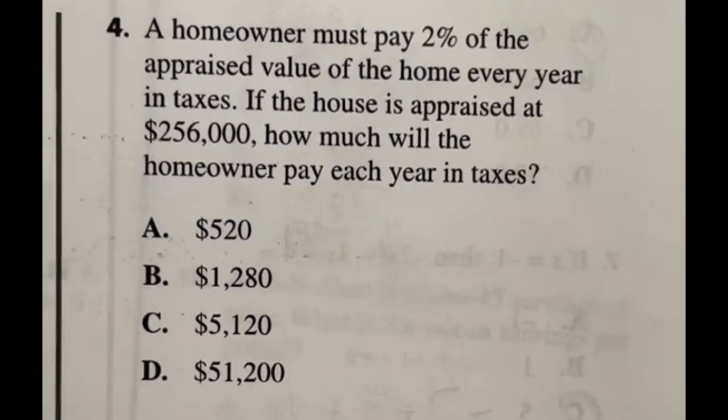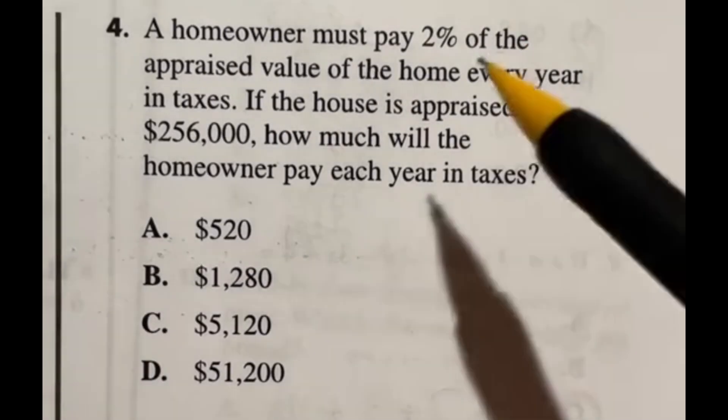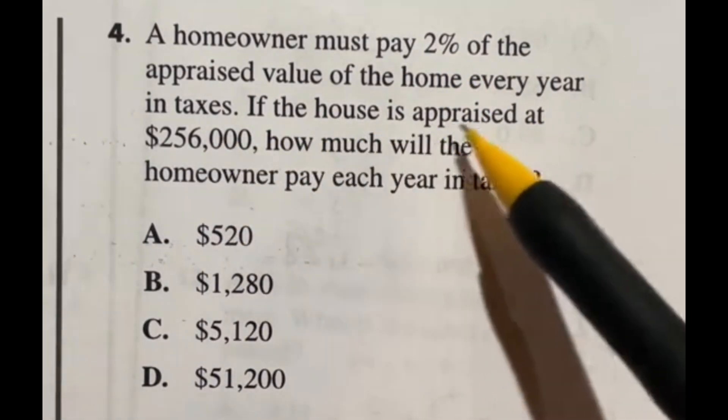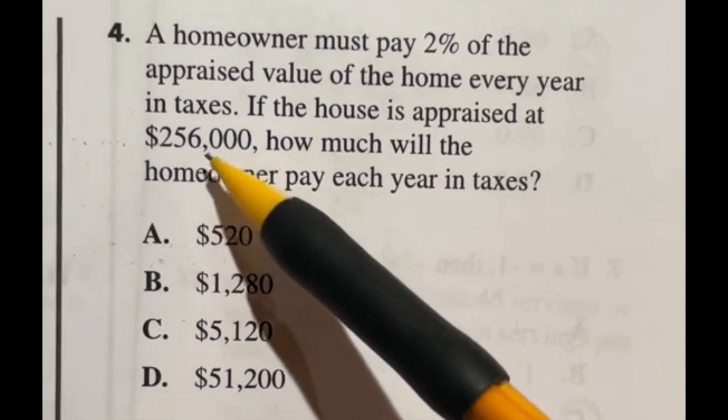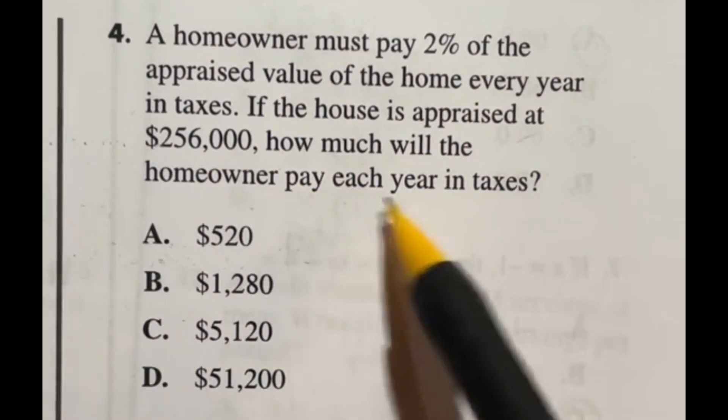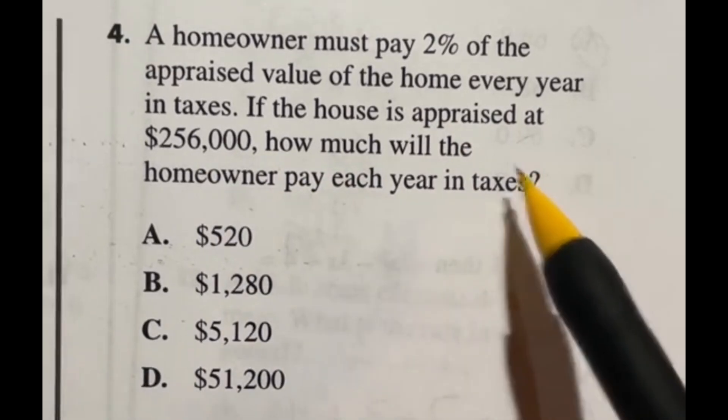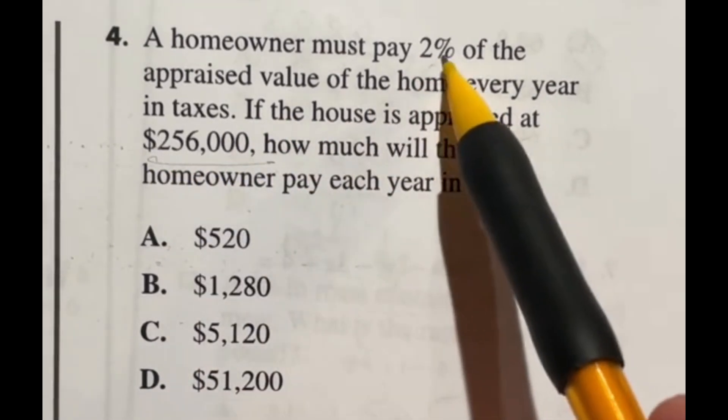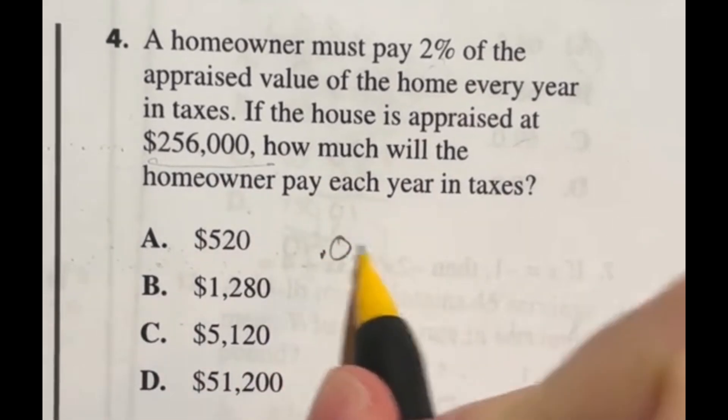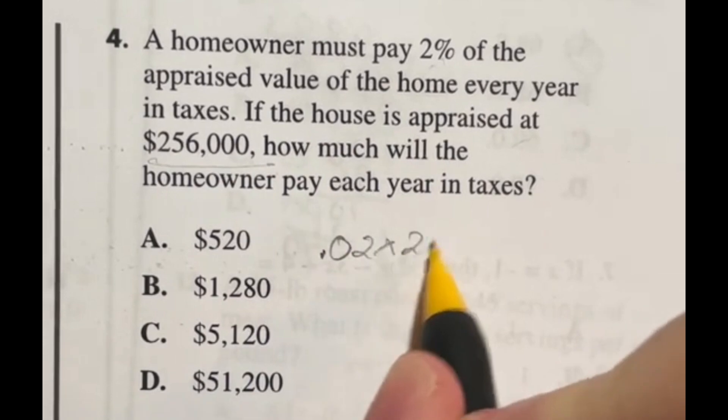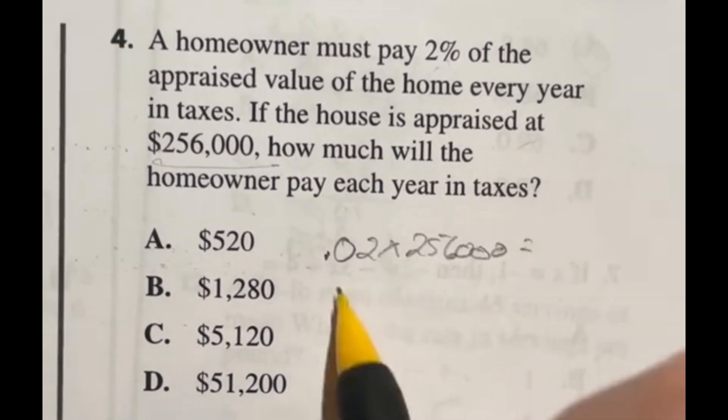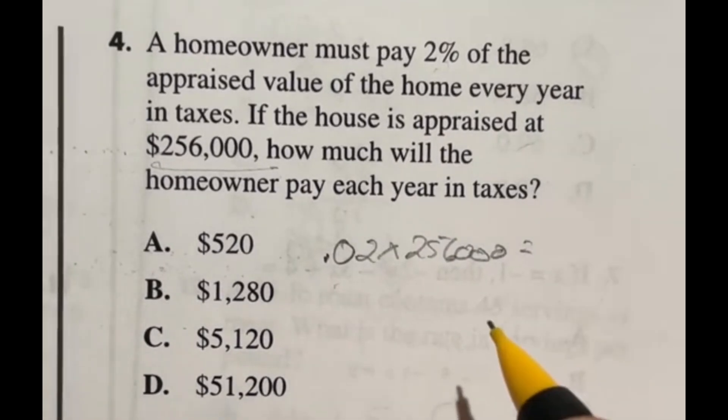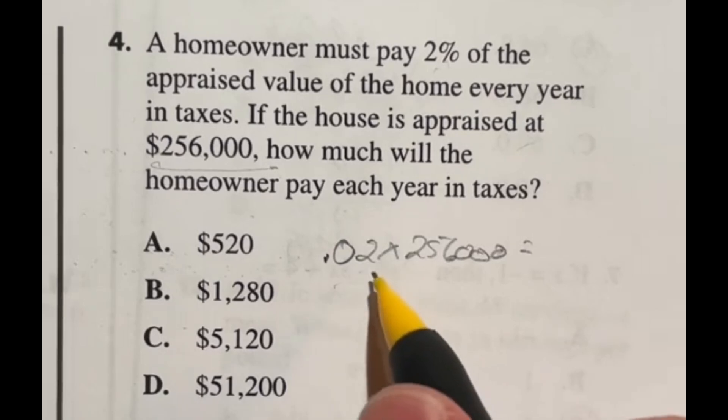So number four says a homeowner must pay 2% of the appraised value of the home every year in taxes. If the house is appraised at $256,000, how much will the homeowner pay each year in taxes? So essentially, you have to find 2% of this entire thing. Now, the way you find a percent of a whole is you just multiply that number times the whole, and it will give you what 2% of that number is. But in this case, we are looking at the ASVAB where you're not allowed to use the calculator. So it may be a little bit easier to do some mental math here.